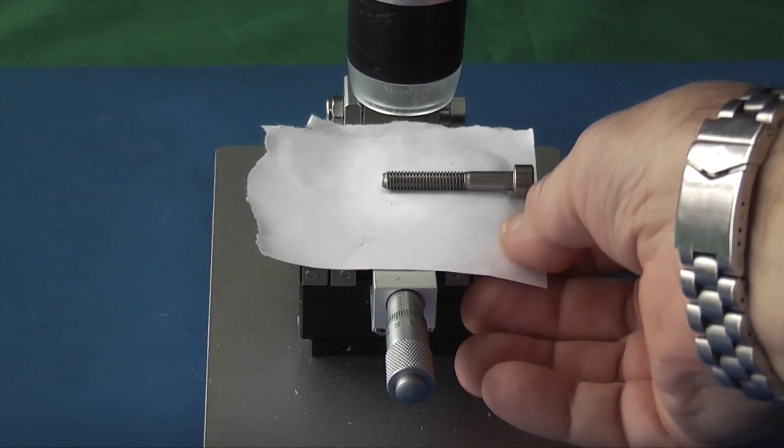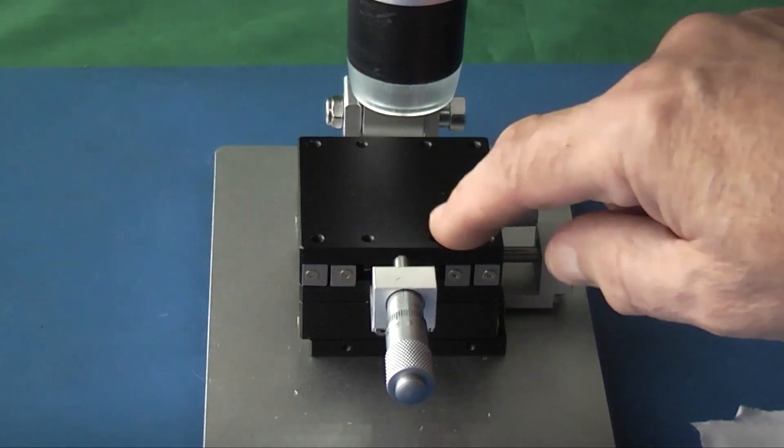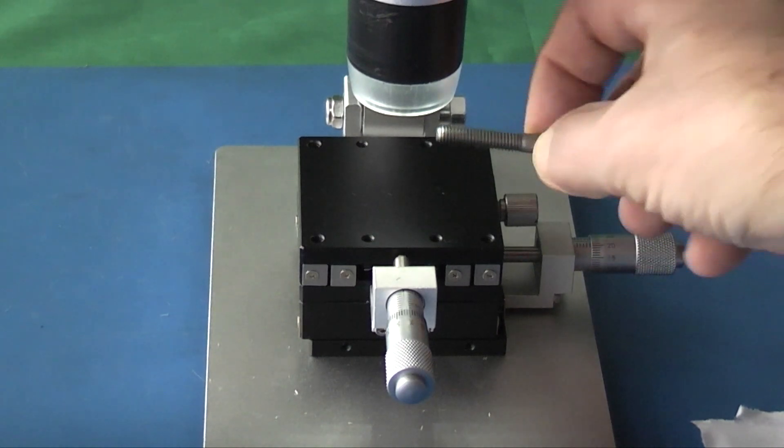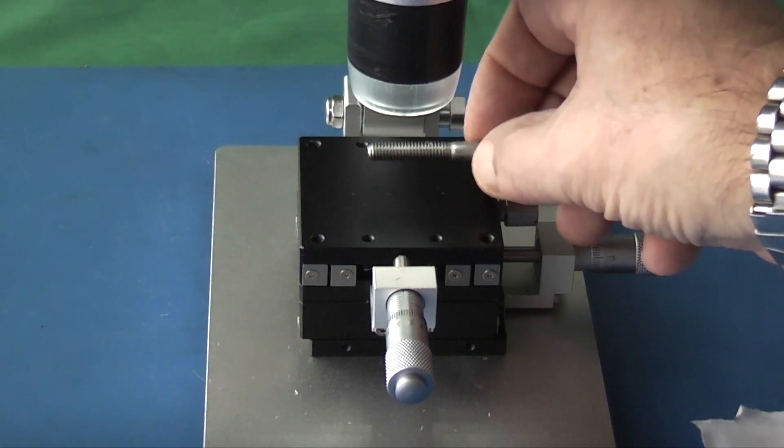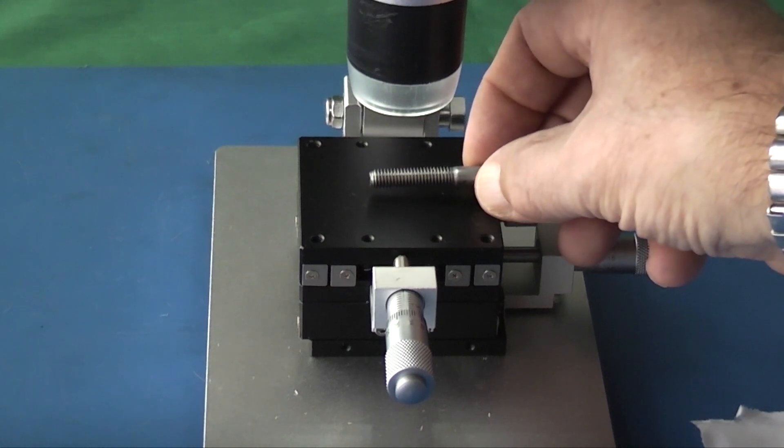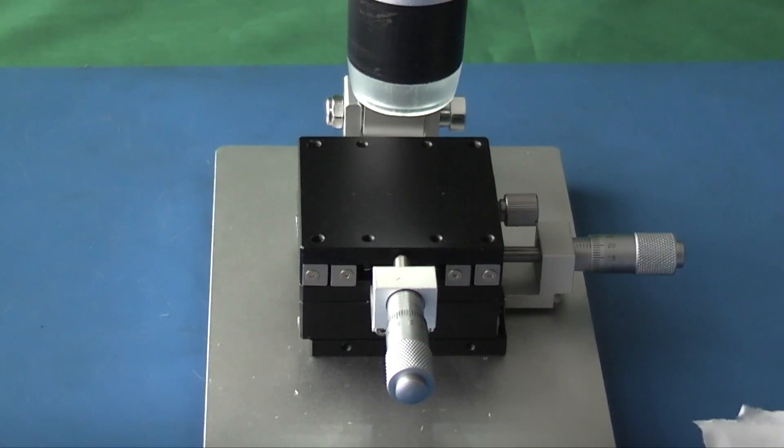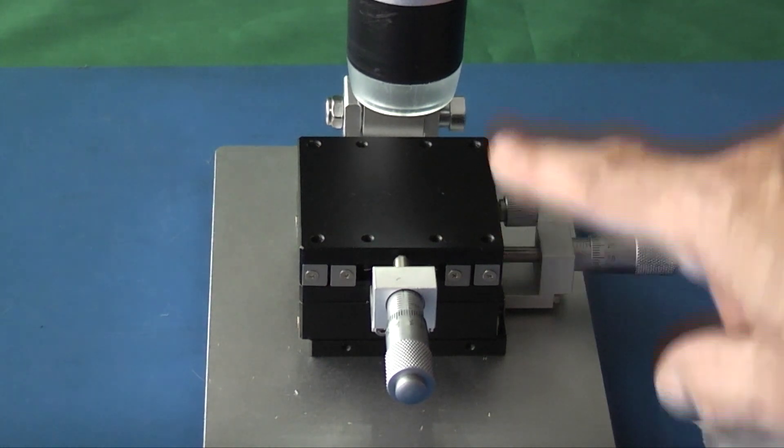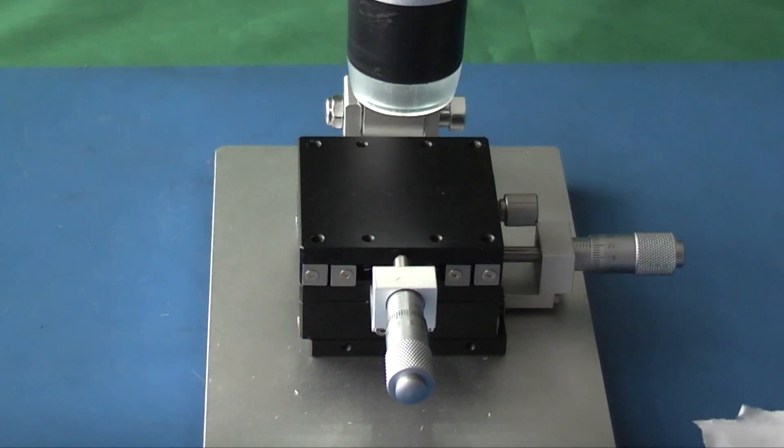So that's the XY stage. There's some tapped holes in the top here. You could put a little V block on there and screw it down. So that when you put your part on, it's perfectly aligned. You can get these in XY and a Z axis so it will move up and down, but obviously they're more expensive. And I've put a link to the part in the video description. So overall nice little piece of equipment.